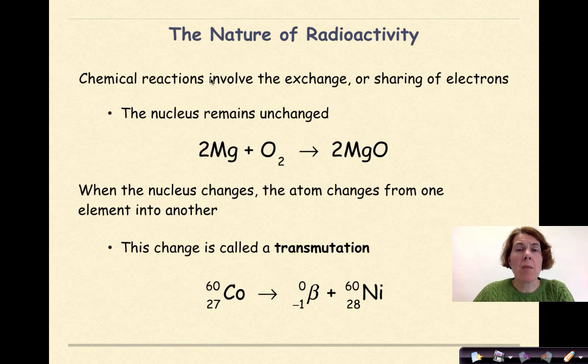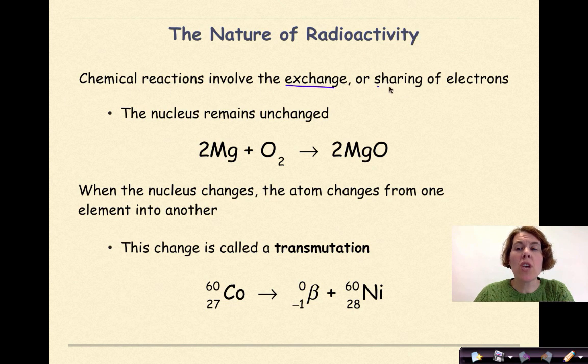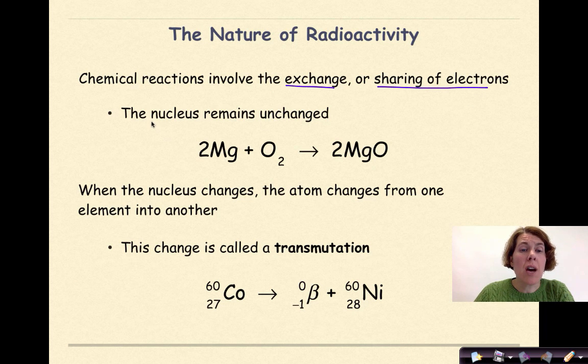So let's start out by talking about the nature of radioactivity. Chemical reactions involve the exchange or sharing of electrons. The nucleus, however, pretty much remains unchanged. So if I have solid magnesium reacting with atmospheric oxygen, ultimately I'm going to produce magnesium oxide.